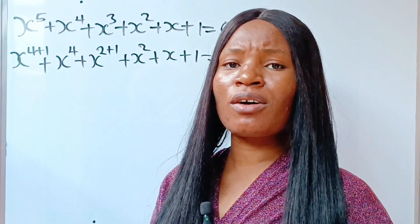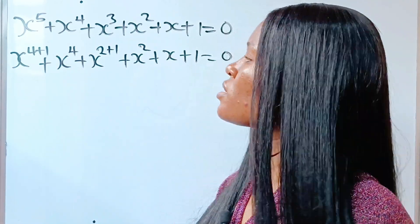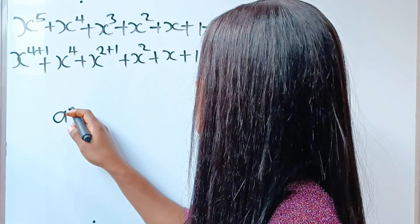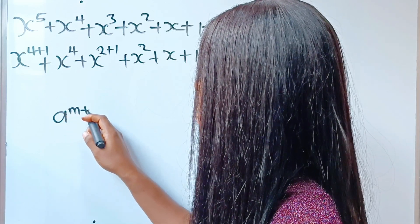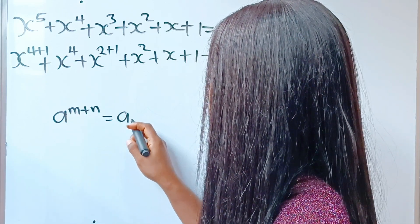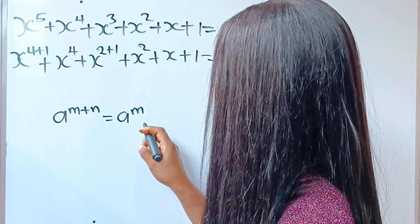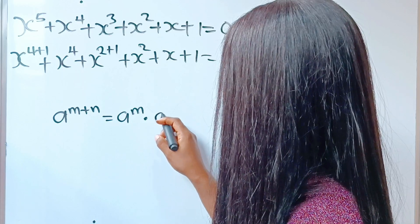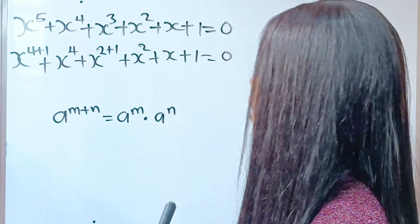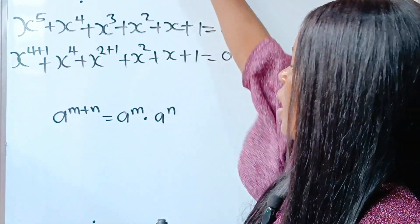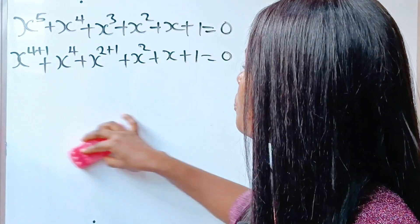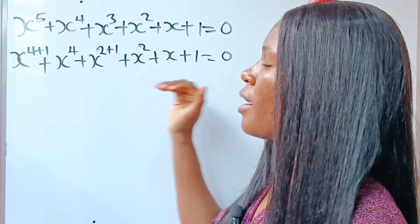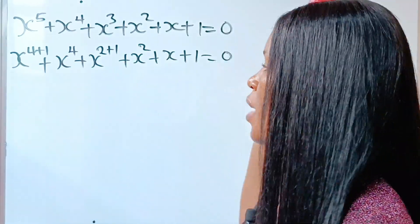Now, let's recall this law of indices or exponents that states that a to the power of m plus n is equal to a to the power of m multiplied by a to the power of n. So, we are going to use that.